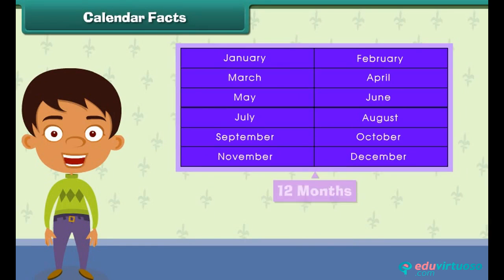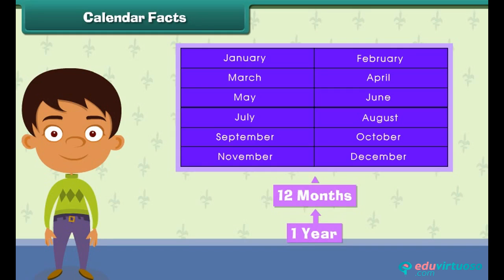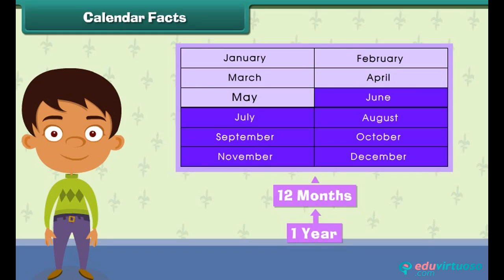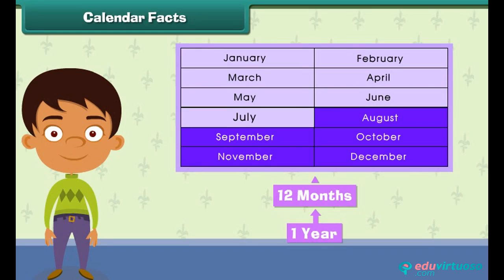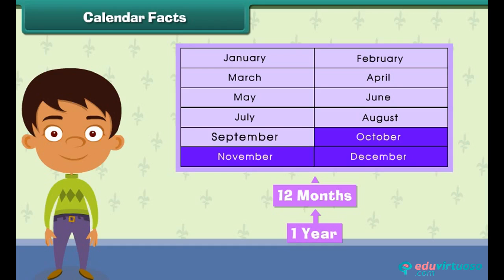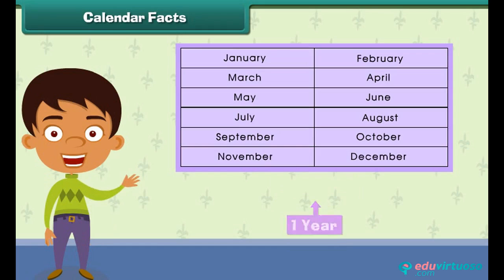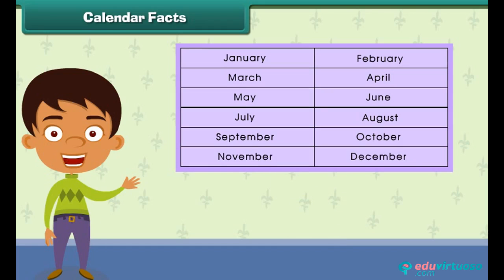There are 12 months in a year. The months are January, February, March, April, May, June, July, August, September, October, November, and December. When all the days are counted in a year, it sums up to be 365 days.